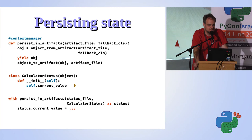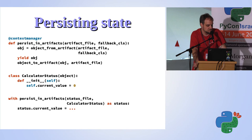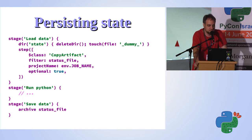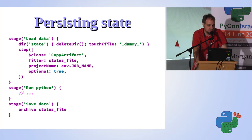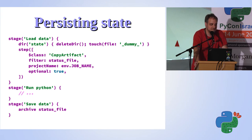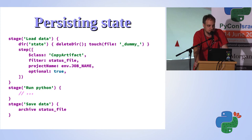You also need some kind of mutable object — even if you need to store one int you need a class or something around it that can be mutable — so I'm creating a simple class here. You just use the context manager and inside it use your code to do whatever you want to the object. On the Jenkins pipeline side: in the load-data stage I use the copyArtifacts step to bring back the state file, then I run my Python, and in the save-data stage I tell Jenkins to archive the file back.